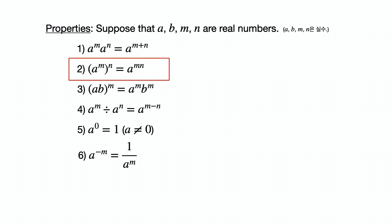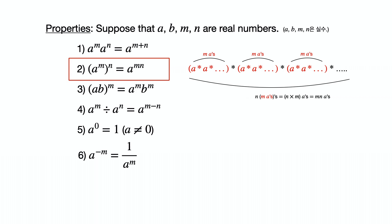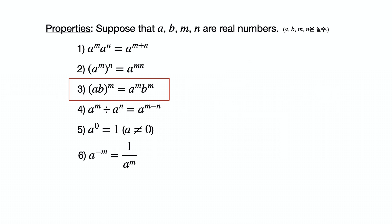Property 2: a to the m power, raised to the n power, equals a to the m times n power. As you multiply n groups of m a's, you get n times m multiples of a. Property 3: a b to the n power equals a to the n power times b to the n power.